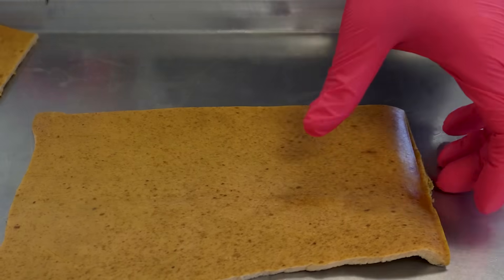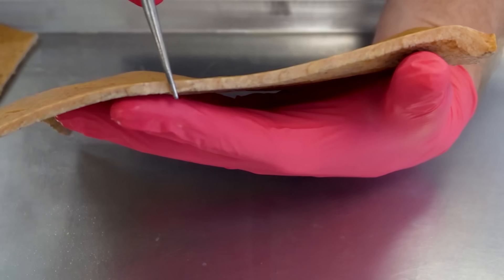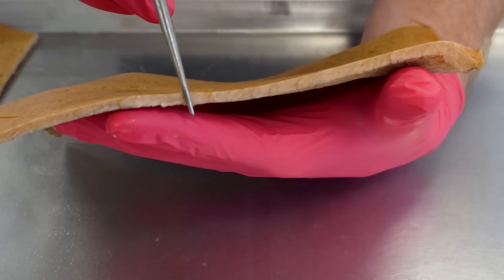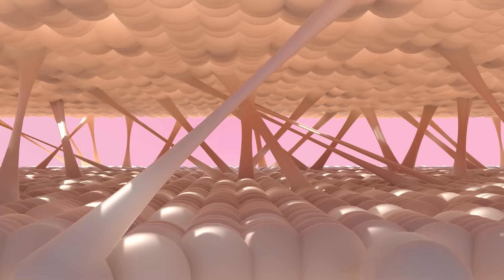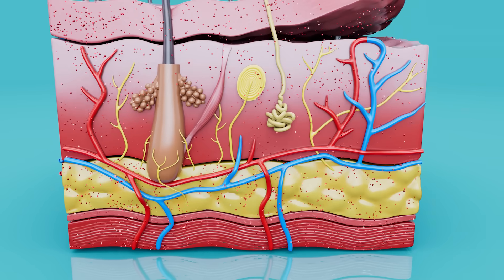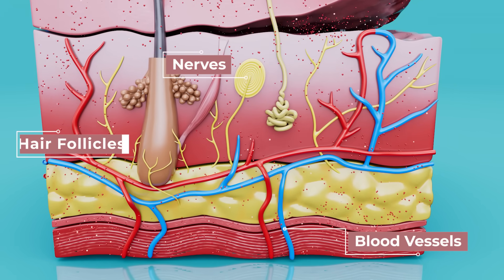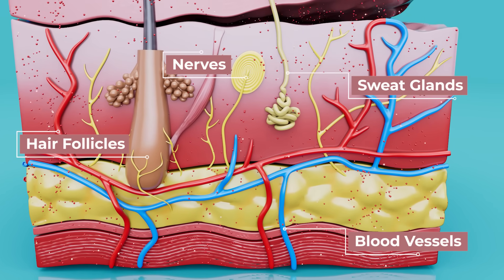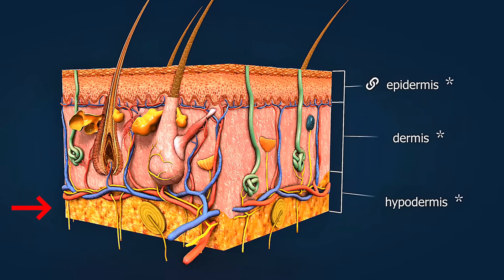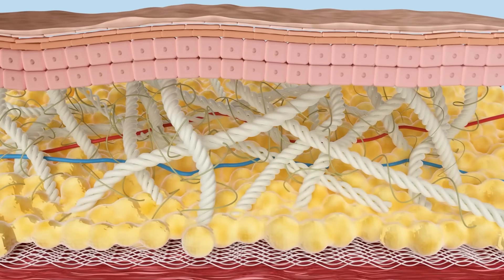Below we have the dermis, which was the majority of the thickness in the skin dissection, and this is also susceptible to sun damage. This thicker layer is full of collagen and elastic fibers that keep your skin firm and elastic. The dermis also houses blood vessels, nerves, hair follicles, and even sweat glands. And the next layer — not technically part of the skin, but part of the whole integumentary system — is the hypodermis, which is mostly made of fat and connective tissue, providing insulation, energy storage, and cushioning.